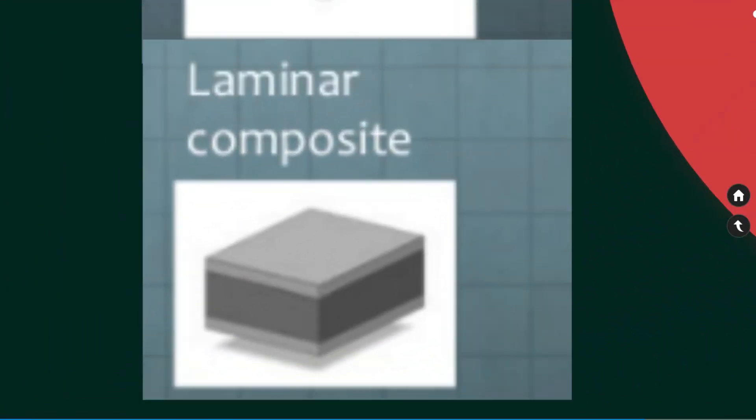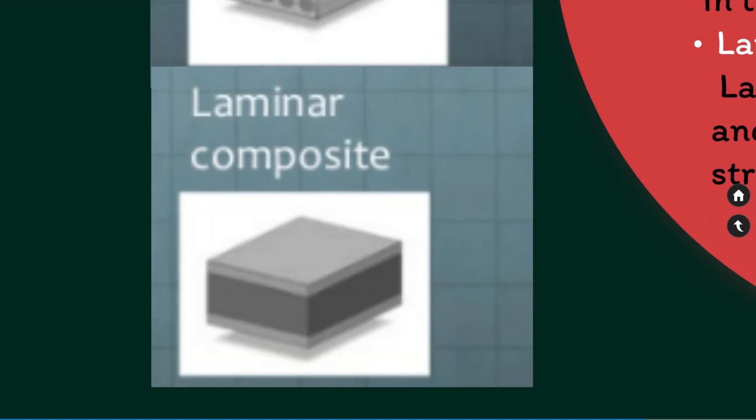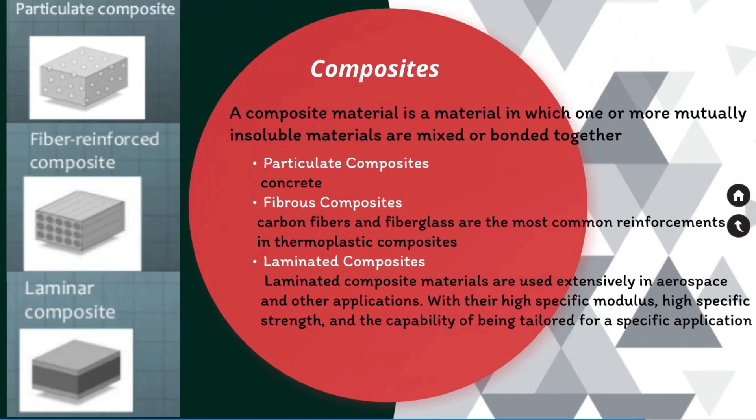Laminated composites are created by combining layers of composite material. The layers typically differ in the orientation of the fibers or in the material itself. Sandwich materials are common, in which a lightweight material is placed between layers of a strong and stiff material. Laminated composite materials are used extensively in aerospace and other applications.